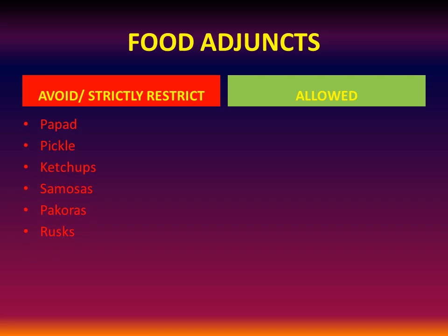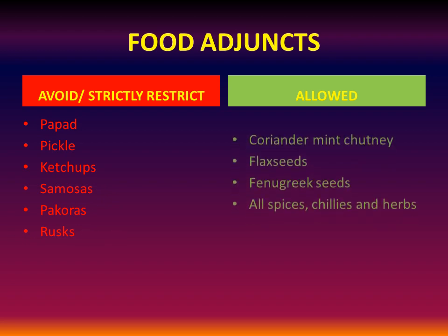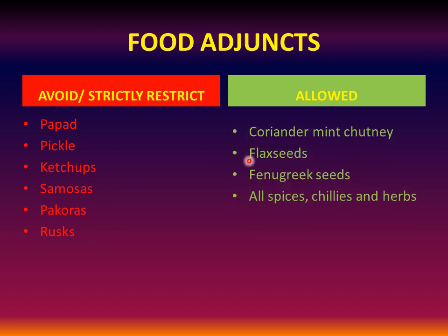Food adjuncts: papad, pickle, ketchup, samosas, pakoras, and rusks have to be avoided by diabetics. Coriander, mint chutney, flax seeds, fenugreek seeds, all spices, chilies, and herbs are permissible.